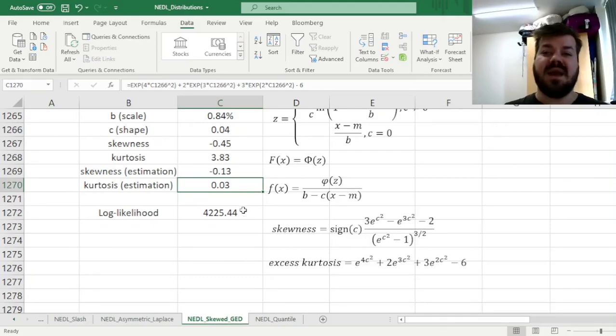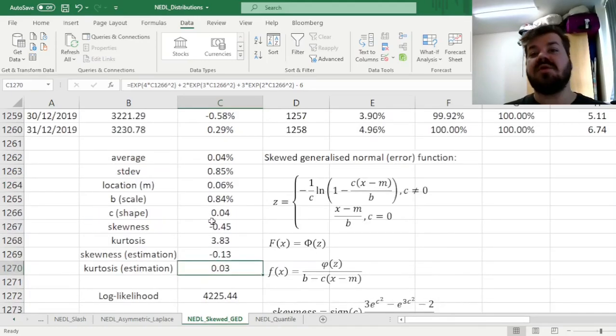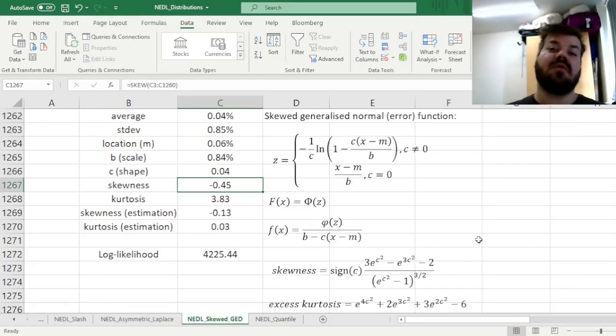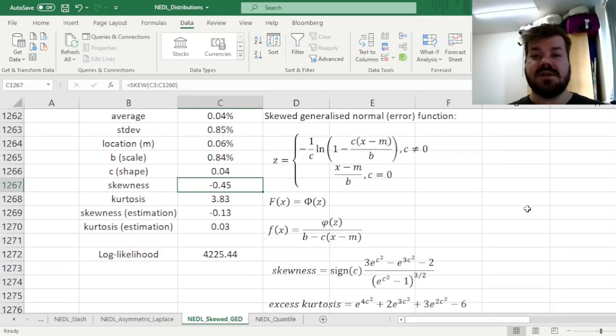And that means that our distribution function, the source of its skewness, cannot be necessarily explained that well by this particular parameterization, and you would rather use other generalized distribution families, such as, for example, asymmetric Laplace, or asymmetric generalizations of power law functions. And those are either videos we have already got on our channel, or those that I will seek to record in the future. But that's all there is for the skew GED parameterization, and its application in Excel.